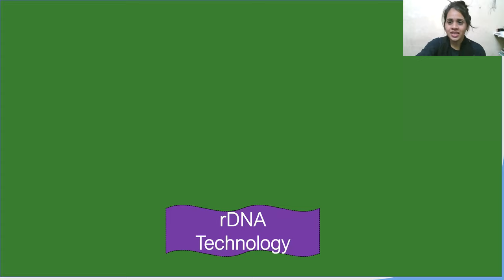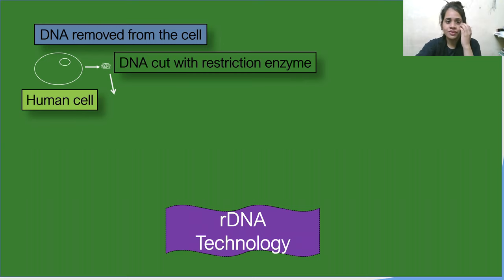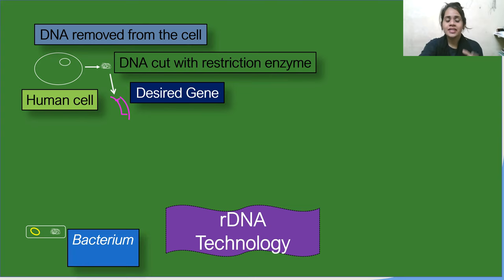Let us see the technique in detail. Take a human cell as an example. The DNA is removed from the cell and then treated with a restriction enzyme, because you need only a part of the DNA — just a specific gene. So you cut that DNA with the help of a restriction enzyme, and the desired gene is obtained.